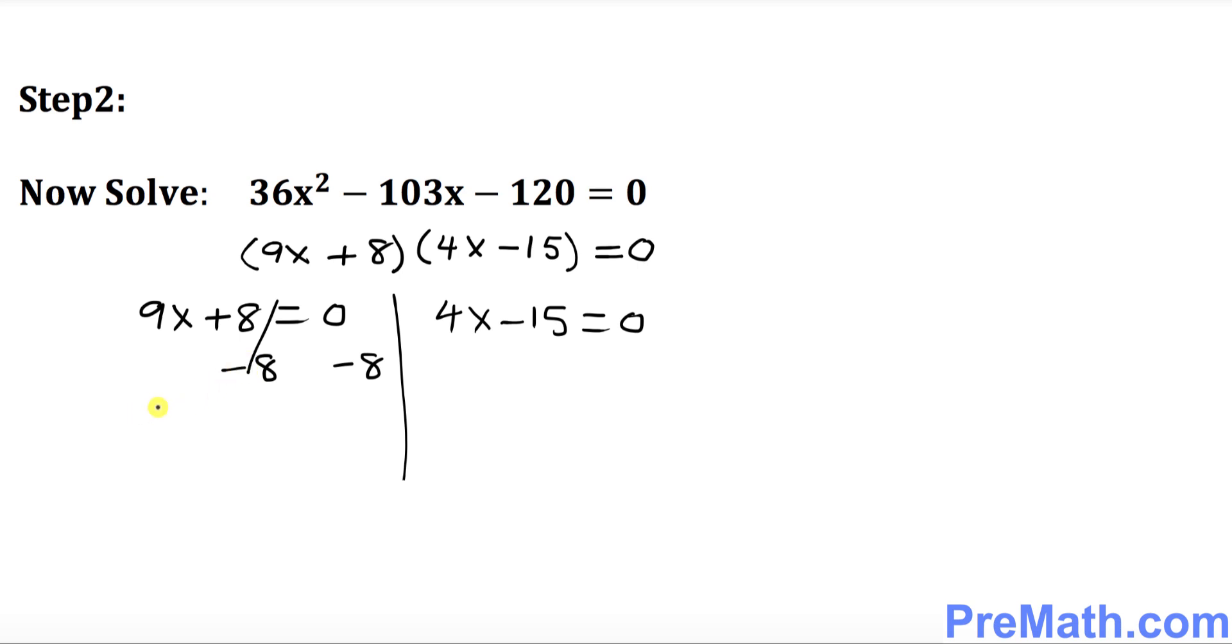So this cancels out. So we got 9x equal to negative 8. Divide both sides by 9. So we got x equals to what? Negative 8 over 9. That is one of our solutions.